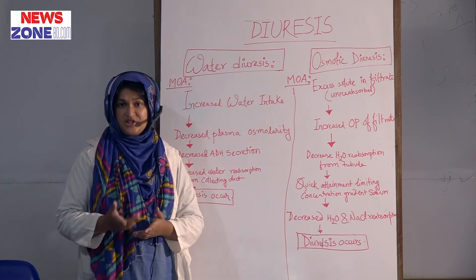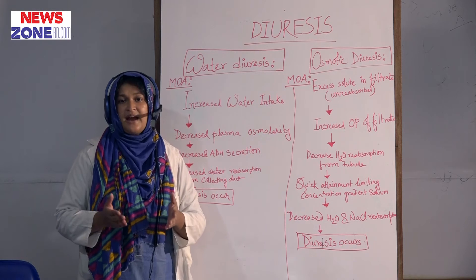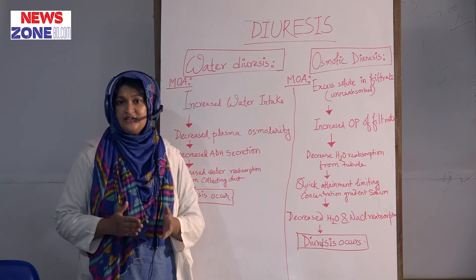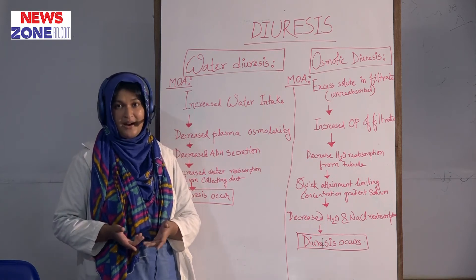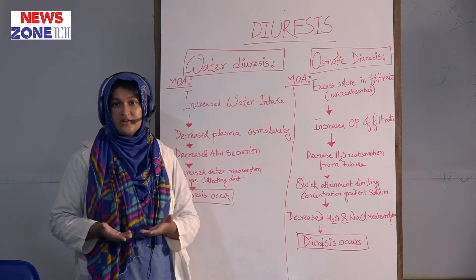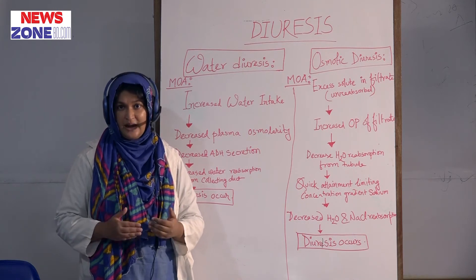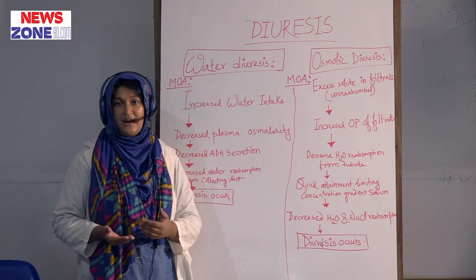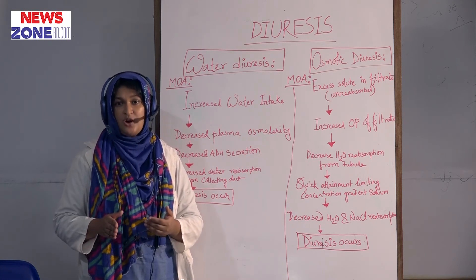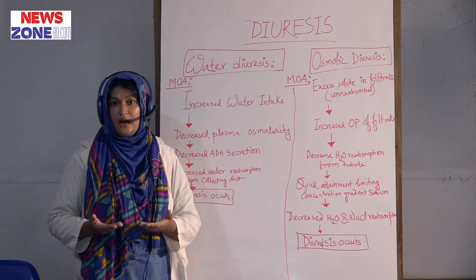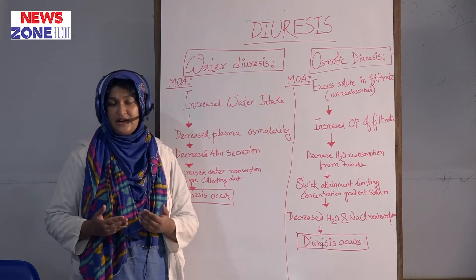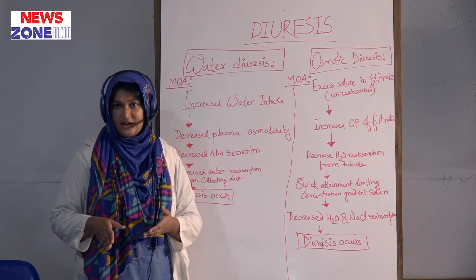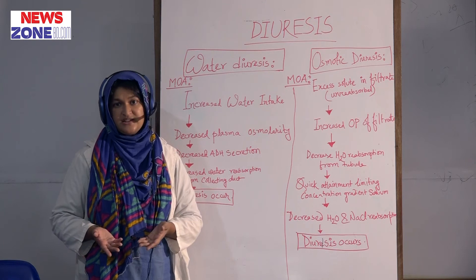Now, pressure diuresis. In pressure diuresis, there is formation of large volume of urine due to high mean systemic blood pressure, more than 200 mmHg. In case of more systemic blood pressure, renal autoregulation fails, causing increased GFR and increased rapid outflow of the filtrate, which causes increased tubular load of solute in the filtrate and decreased water and sodium chloride reabsorption, resulting in pressure diuresis.